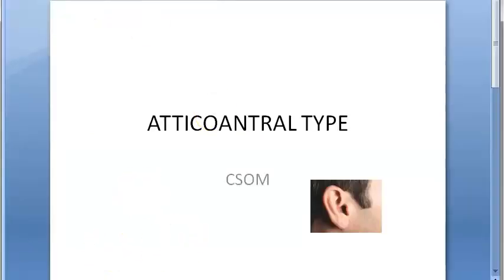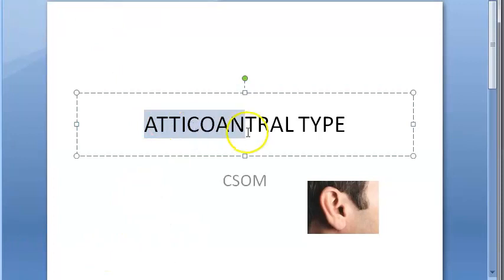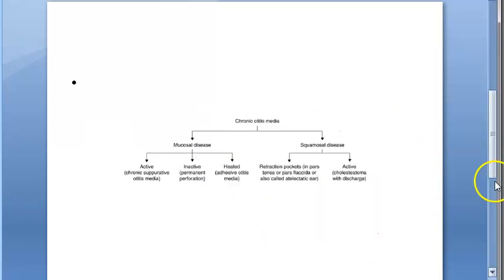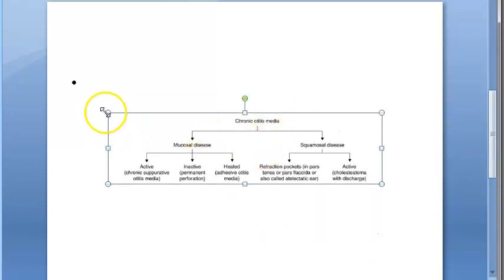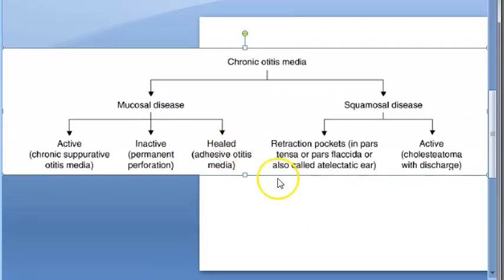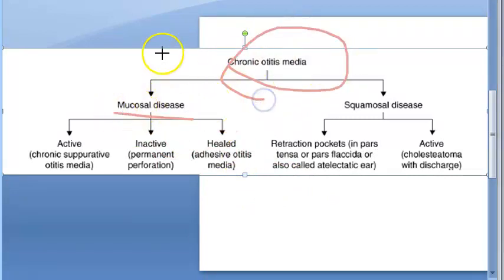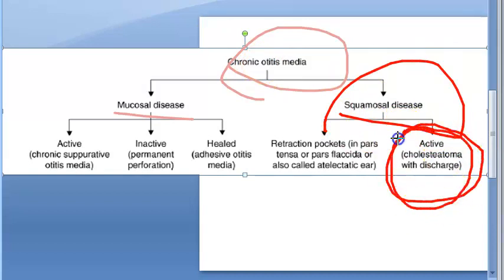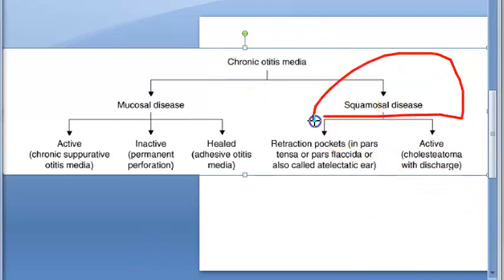In this video, let us look at why the atticoantral type of CSOM is very dangerous. It is called the dangerous type of CSOM - Chronic Suppurative Otitis Media, which is a chronic middle ear infection. Under chronic otitis media, you have two types: mucosal and squamous disease. Currently we are focusing on the squamous type, which is the atticoantral type.